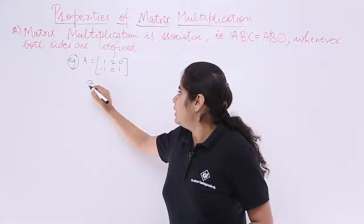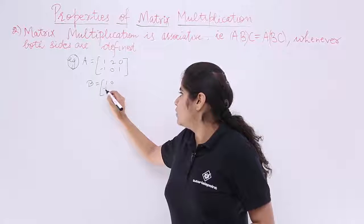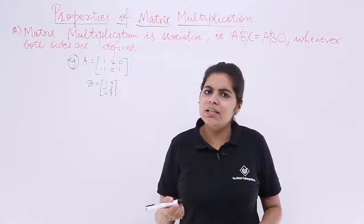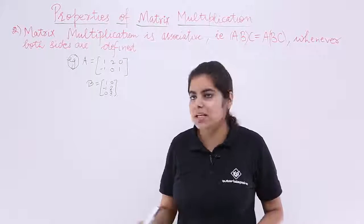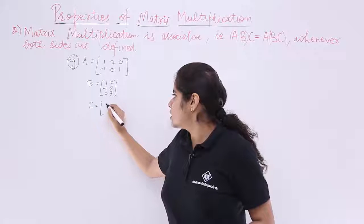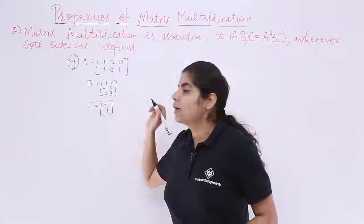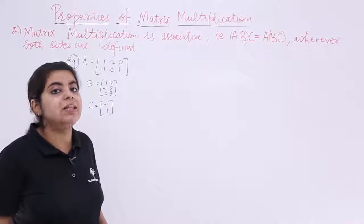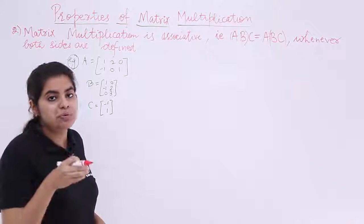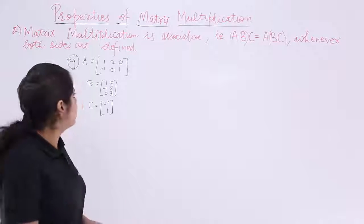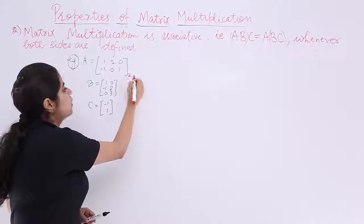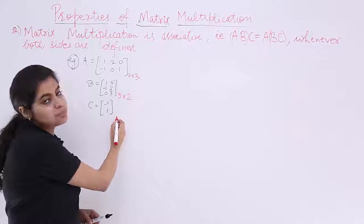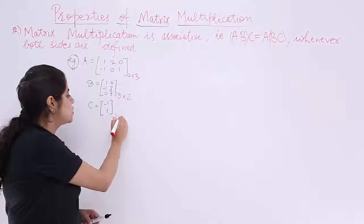Matrix B is [1, 0, −1 / 2, 0, 3] and matrix C is [−1, 1]. Now let's define the orders of these matrices. Order = number of rows × number of columns. Matrix A has 2 rows and 3 columns, so it is 2×3. Matrix B has 3 rows and 2 columns, so it is 3×2. Matrix C has 2 rows and 1 column, so it is 2×1.